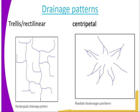Then we have the centripetal drainage pattern. When we talk about the centripetal, it means that these rivers are brought together to one point. They are coming from different areas, and the distributaries are bringing the water to one point.